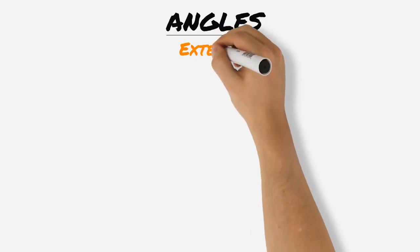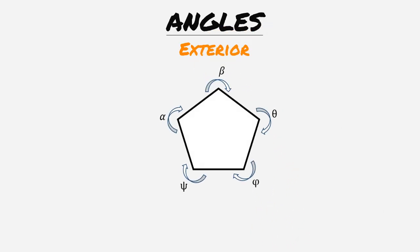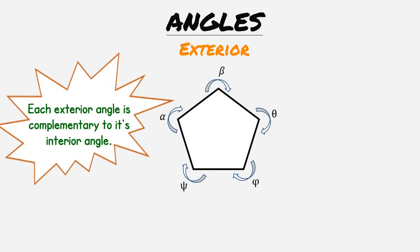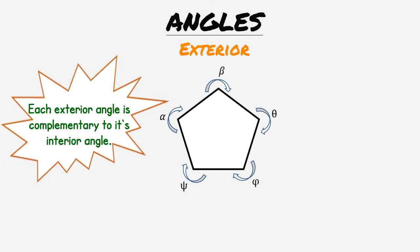Now let's switch to exterior angles. Note that each exterior angle is complementary to its own interior angle. With exterior angles we can follow the same process. First determine if the polygon is balanced or not.